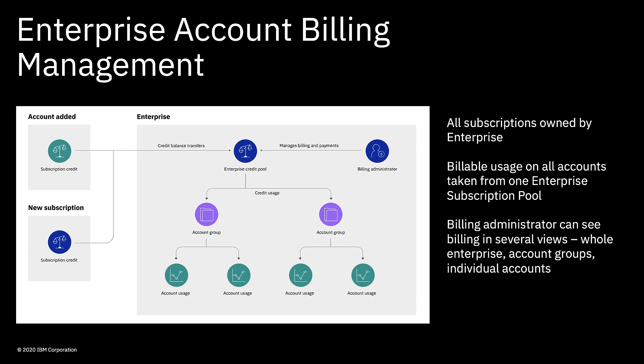The billing administrator in the enterprise will be able to see the breakdown of billing in several views, making it easy to cross-bill departments within the organisation. Using IAM privileges, you can set up different users who can see different views. The financial officer can see everything and track and recover costs from each department. Department leads can be set up to see everything in their department, denoted by an account group. Team leads can be set up with access to see what their team is spending. It's all very flexible, highly granular, and quite simple to manage as well.